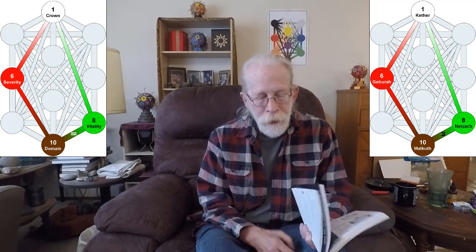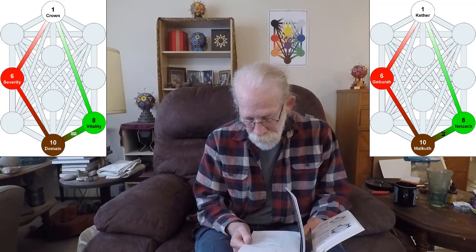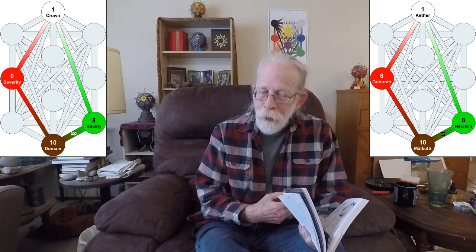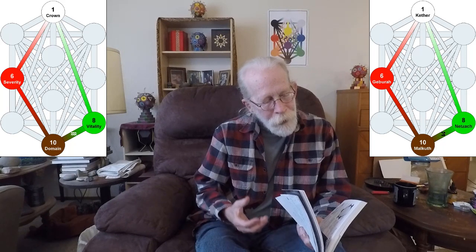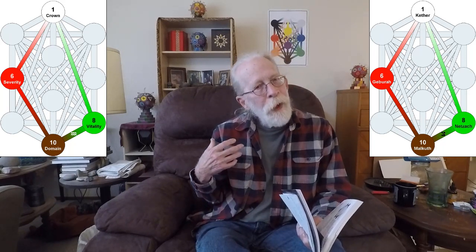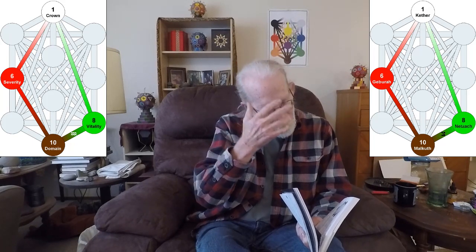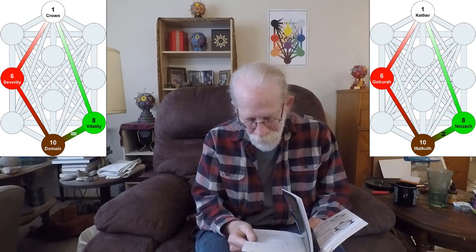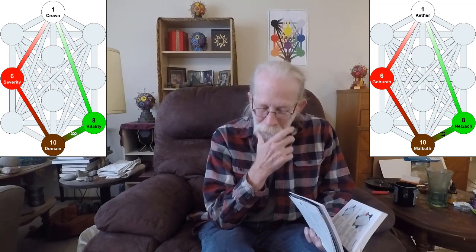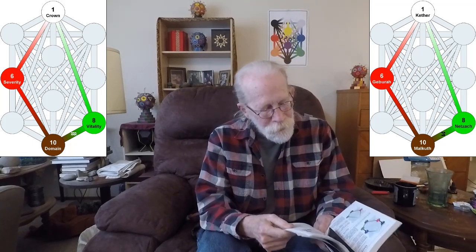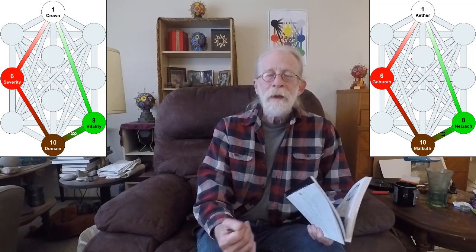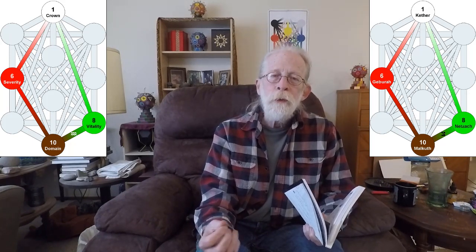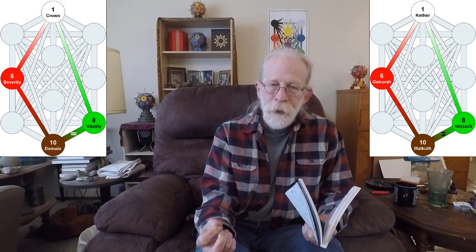The last gate is gate number 148, and it is a quadrangle. It starts in Netzach, follows Tzadhi to Malkuth, takes that hidden path up to Gebura, takes the hidden path from Gebura up to Kether, and then that hidden path from Kether all the way down to Netzach, and then back around. This is probably the highest level of self-preservation — the highest, most noble aspect of self-preservation.